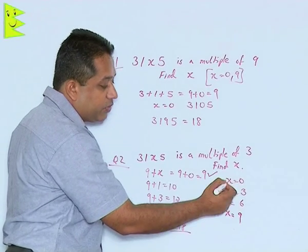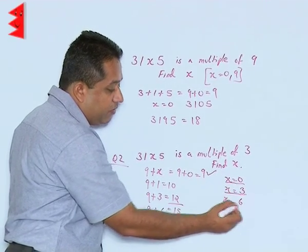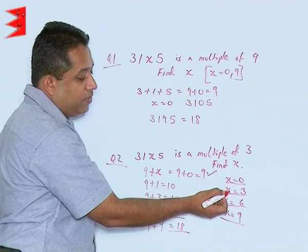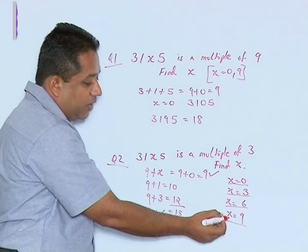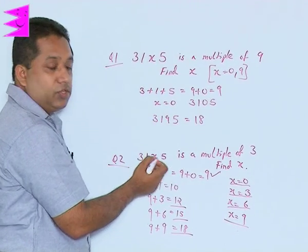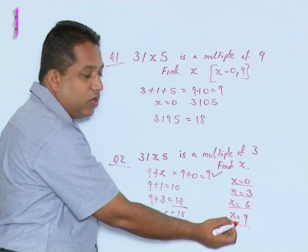So in this particular question we are getting 4 different values of x. So x could be 0, 3, 6 and 9. And as we explained here before that the value of x is a single digit number. So you need not try out values beyond 9.